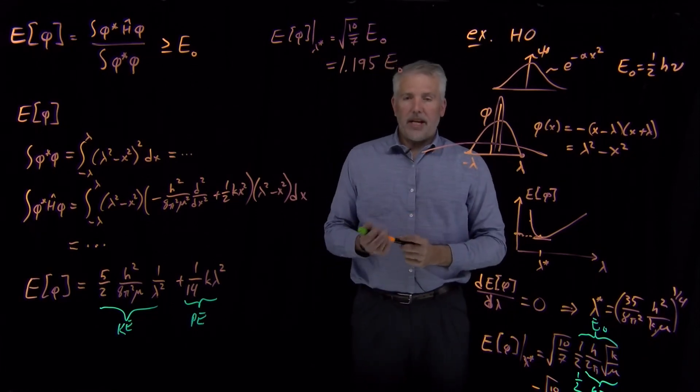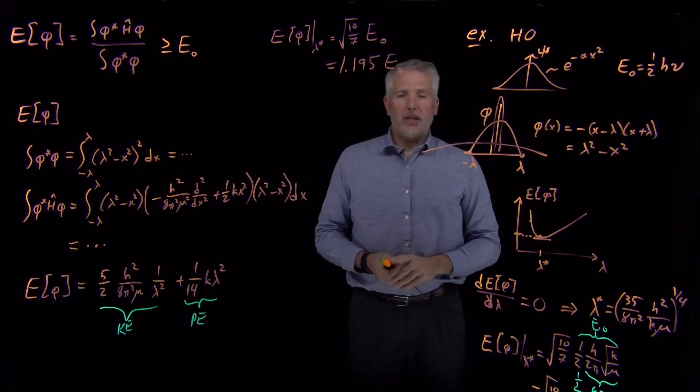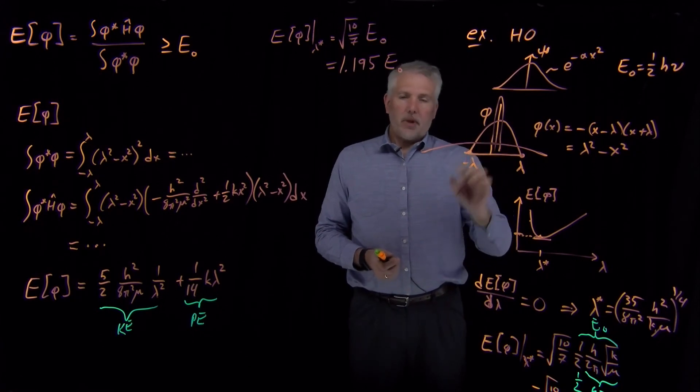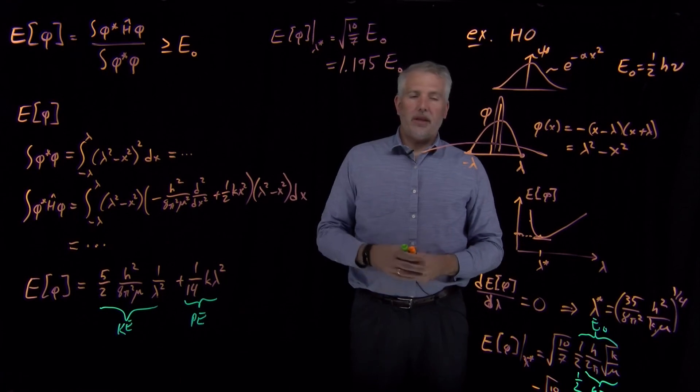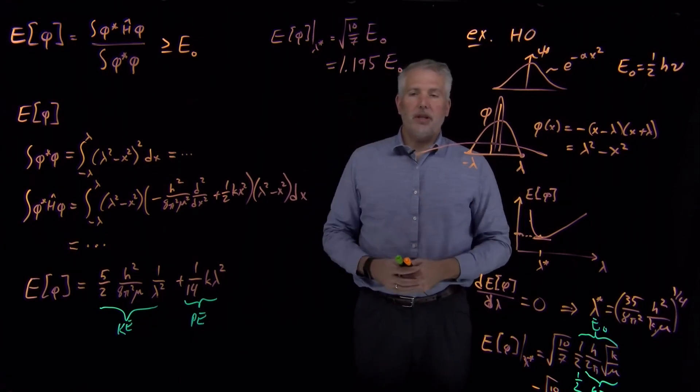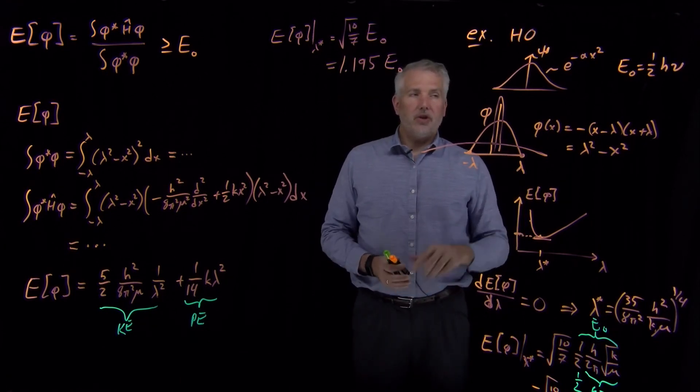So, because a parabola is not actually the correct wave function for a harmonic oscillator, it's actually a reasonable guess but not a terribly good guess, the lowest I can get the energy with a parabola as my trial wave function is about 20% larger than the ground state energy.